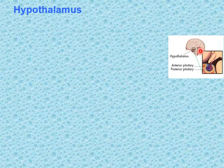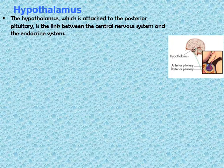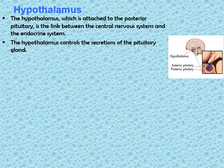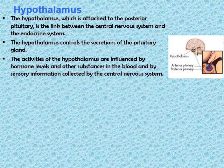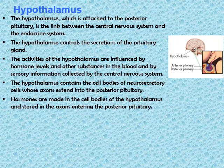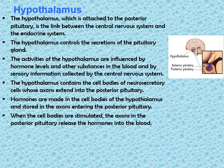The hypothalamus is located inside the brain, just above the posterior pituitary. The hypothalamus, which is attached to the posterior pituitary, is the link between the central nervous system and the endocrine system. The hypothalamus controls the secretion of the pituitary gland directly. Its activities are influenced by hormone levels and other substances in the blood and by sensory information from the central nervous system. The hypothalamus contains cell bodies of neurosecretory cells whose axons extend into the posterior pituitary. Hormones are made in the cell bodies and stored in the axons entering the posterior pituitary. When the cell bodies are stimulated, the axons in the posterior pituitary release the hormones into the bloodstream, which then influence other endocrine glands or tissues.